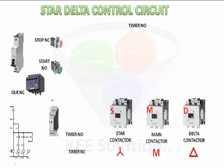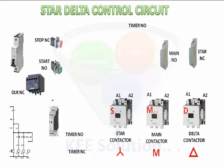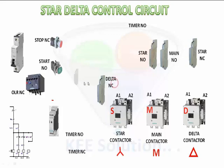A1 and A2 are coil connections for the star, main and delta contactors. We also take star auxiliary NC and main NO contacts for the main contactor. All auxiliary contacts are found on the left side of the contactor. Similarly, star NO contact and delta contactor NC contact are placed on the right-hand side — we are taking them separately for ease.